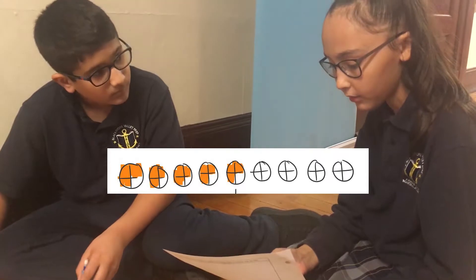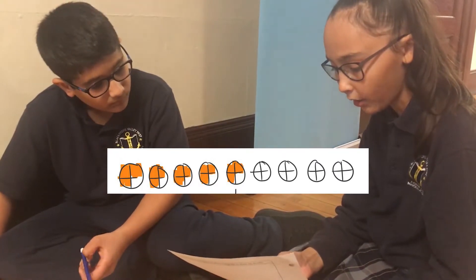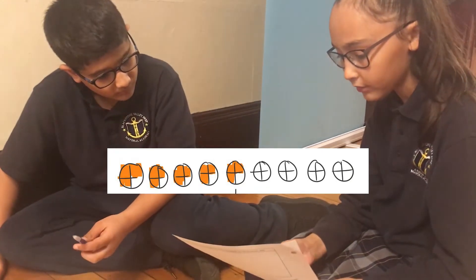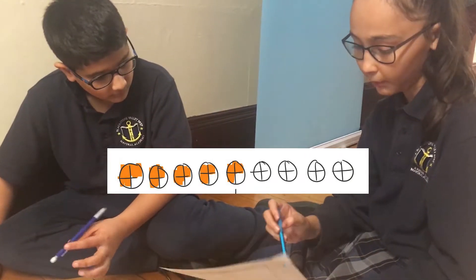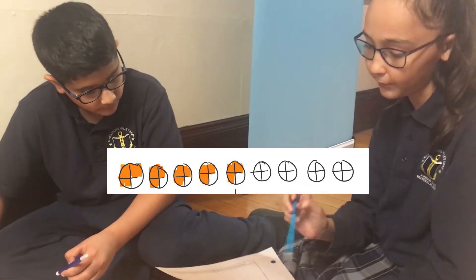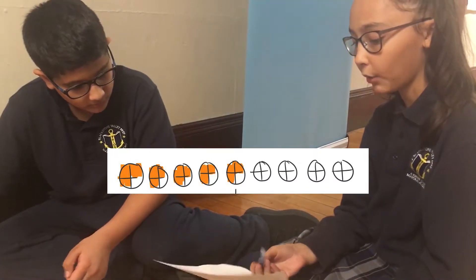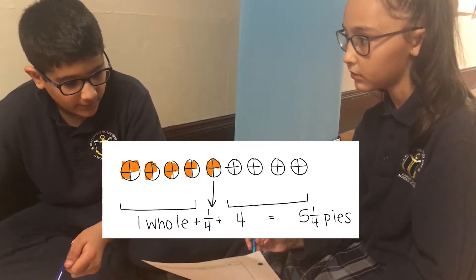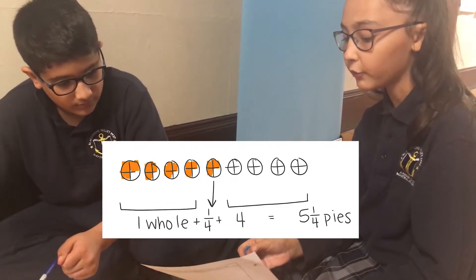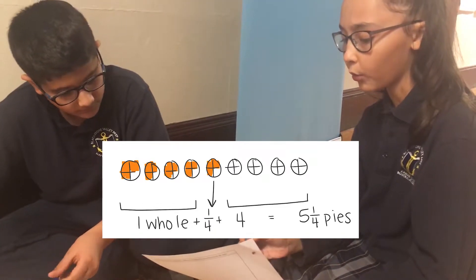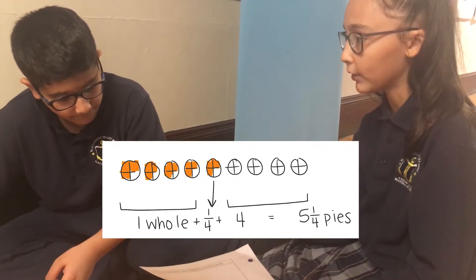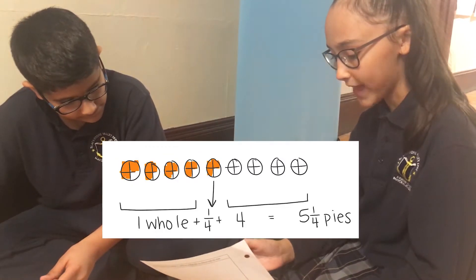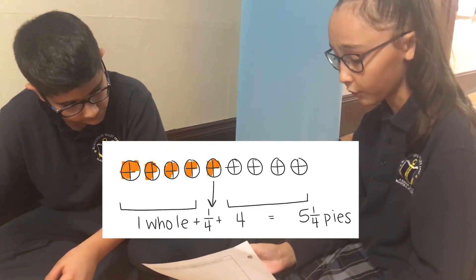So then what I did is I grabbed all the leftover ones and brought them down. I underlined four of them because we have five of them but four would make a whole. So you basically added all five, which got you to one and one-fourths.